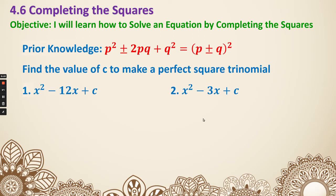First, some prior knowledge. We have learned that formula back in unit 1: p squared plus or minus 2pq plus q squared equals parentheses p plus or minus q, then squared. Something I want to emphasize is this middle term. Our end result is something squared, and that is called a perfect square trinomial or perfect square factor. In order to achieve that, we have to make sure the middle term is 2 times the square root of the front number times the square root of the back number.